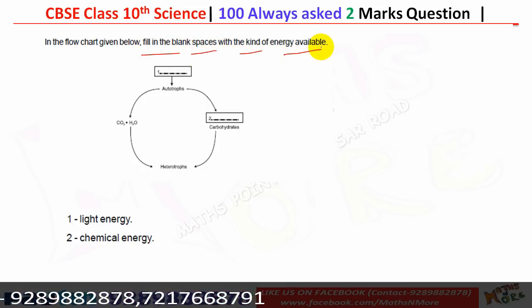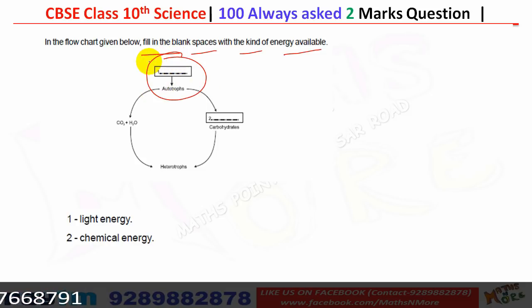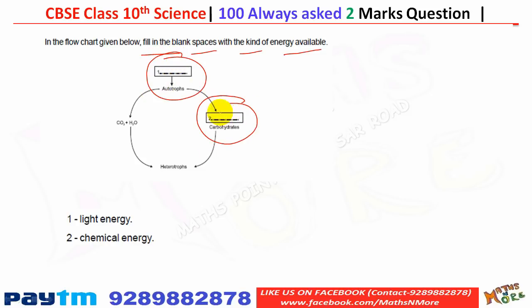In the flow chart about energy, autotrophs use light energy to make their food and carbohydrates. In the second part of the flow chart, the answer is chemical energy.